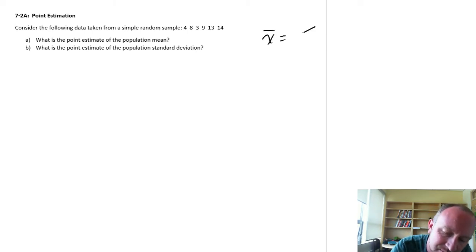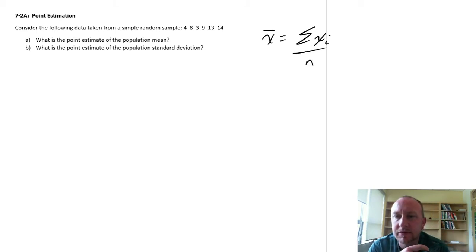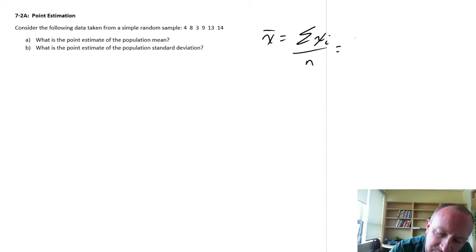and this is simply adding up all of the observations and dividing by the total number of observations that we have. So in this exercise, this is going to be 4 plus 8 plus 3 plus 9 plus 13 plus 14 divided by 6.